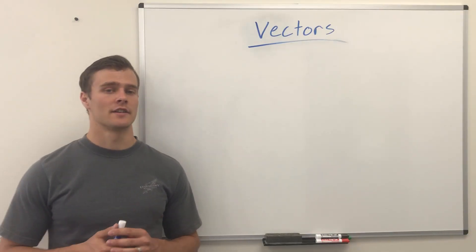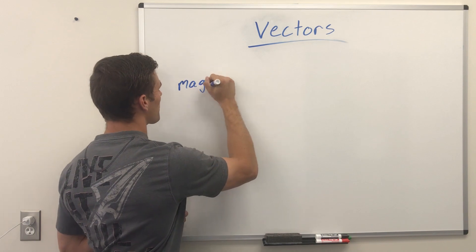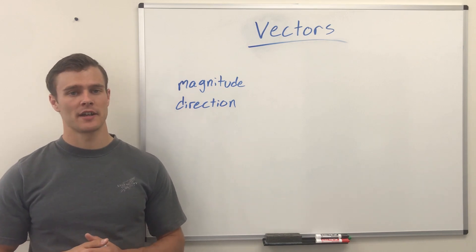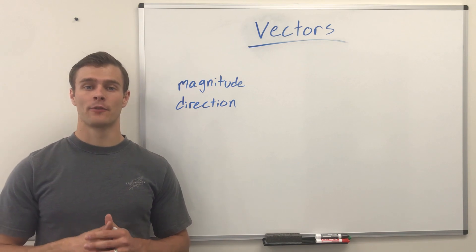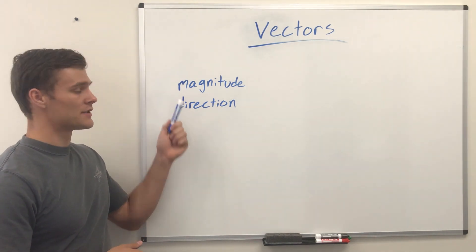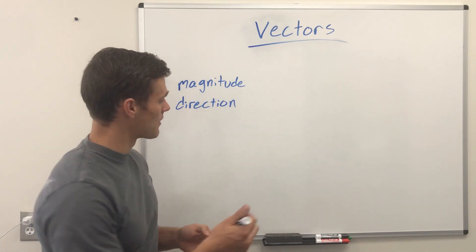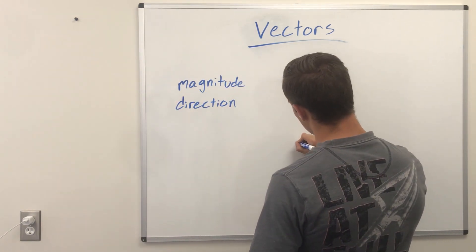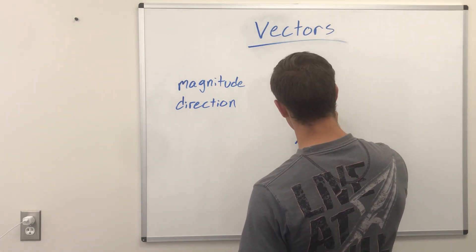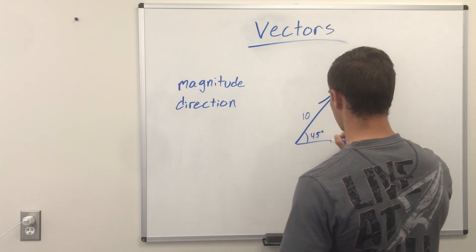A vector is a quantity with both a magnitude and a direction. As an example, say you're giving directions to someone as to how to get to the post office — you wouldn't just say it's four blocks, you'd say it's four blocks that way. So four blocks is the magnitude and that way is the direction. We can draw vectors as arrows, with the direction being the way it's pointing and the magnitude being how long the arrow is. So we'll say this is 10 units long and 45 degrees off the x-axis.